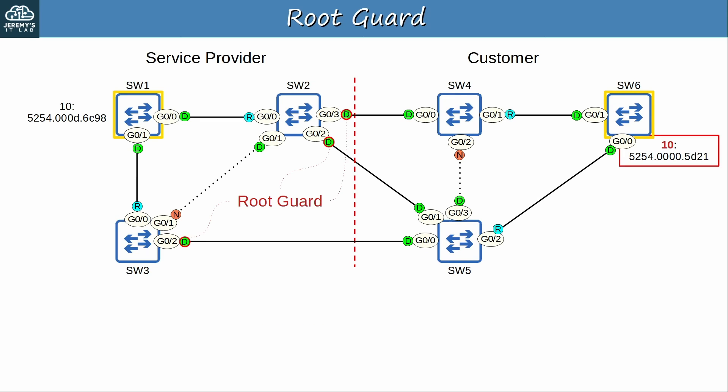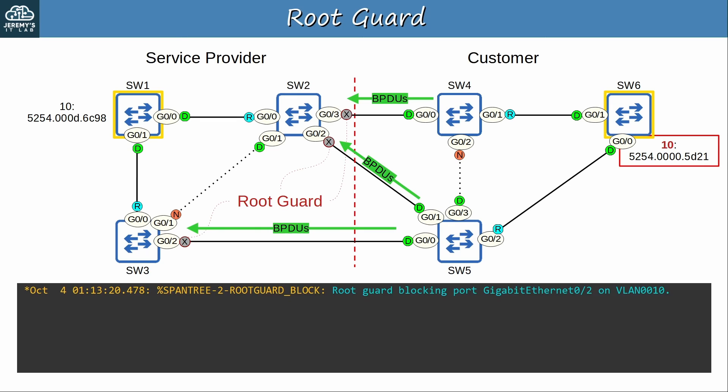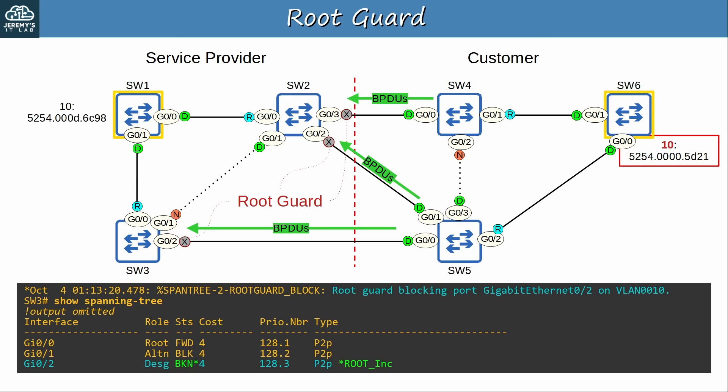So once again SW6 is configured as the root bridge. SW4 and SW5 have accepted SW6 as the root bridge — notice their new root ports pointing toward SW6. They start forwarding SW6's BPDUs toward SW2 and SW3. But this time, SW2 and SW3 don't accept the BPDUs. Instead, they disable their interfaces thanks to RootGuard. Here's a log message on SW3: 'Root guard blocking port G0/2 on VLAN10.' In the output of 'show spanning-tree', G0/2's status is BKN and next to its type it says 'root inc'.